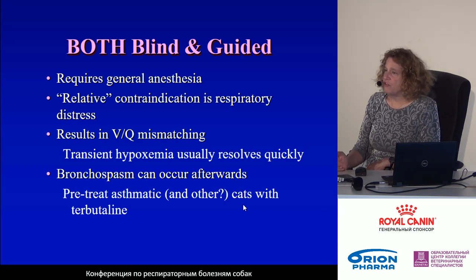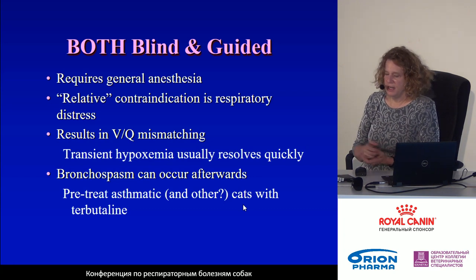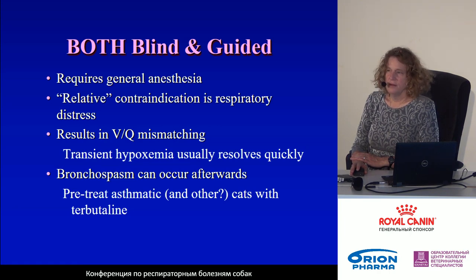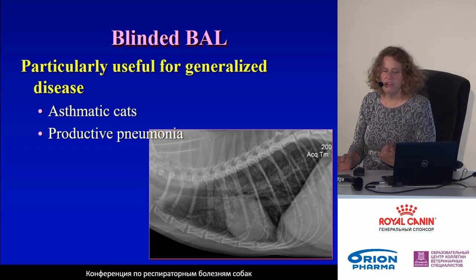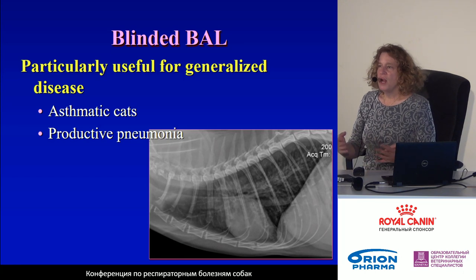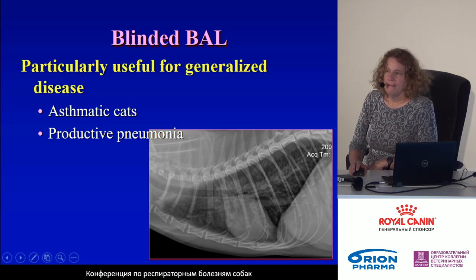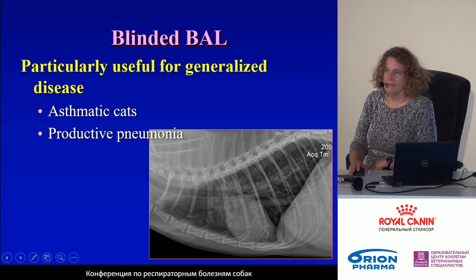Bronchospasm can occur after BAL, especially in cats. So for cats, whether I do bronchoscopically guided or blind BAL, I treat first with a bronchodilator like terbutaline. Blind BAL is particularly useful for generalized disease processes such as asthma in cats to confirm eosinophilic inflammation, productive pneumonia, to collect samples for cultures, and other similar diffuse diseases.